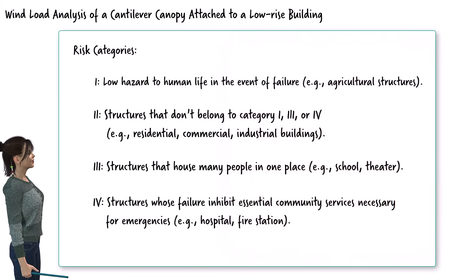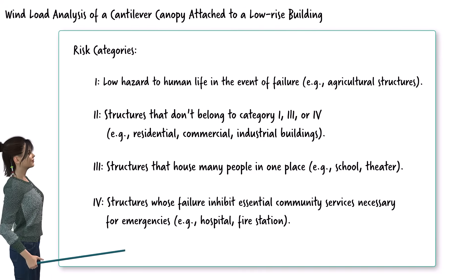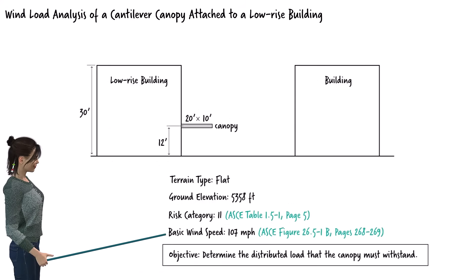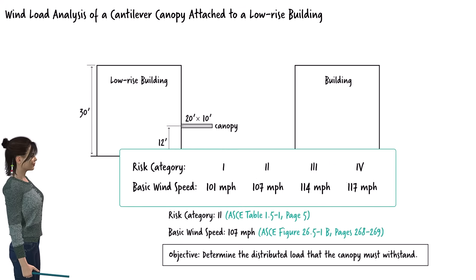The basic wind speed used for designing a structure is determined by its risk category. Since our canopy is part of a commercial building, we have chosen category 2, resulting in a basic wind speed of 107 mph.